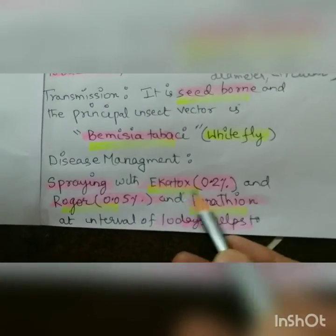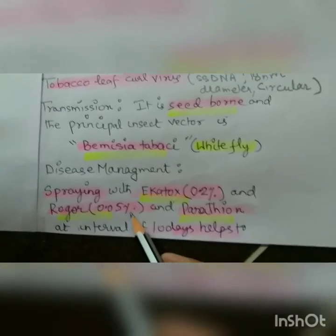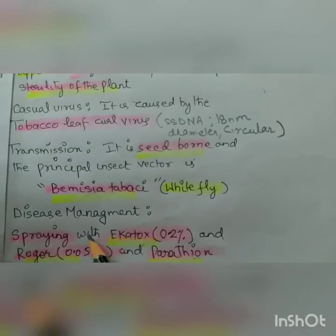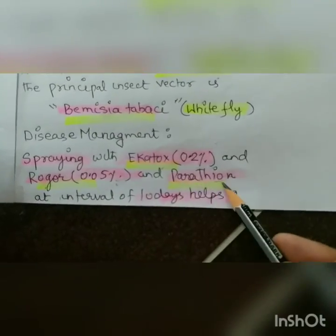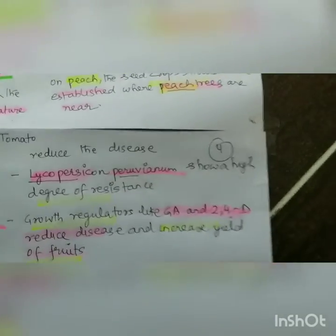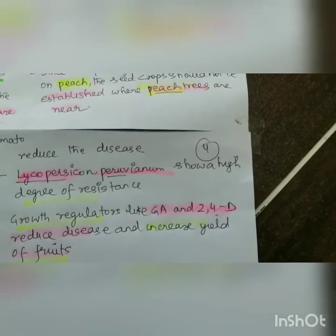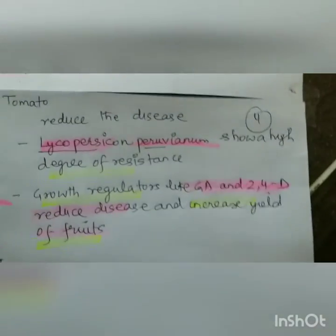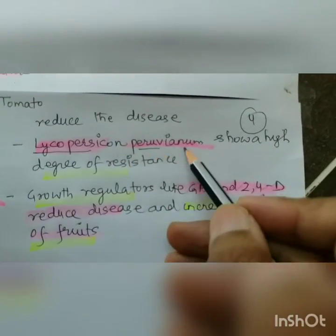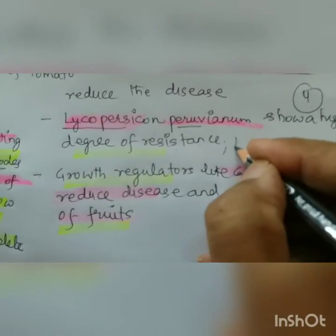When Bemisia tabaci is present, spray Ecatox 0.2%, Rogor 0.05%, Metasystox 0.05%, and Parathion at an interval of 10 days to help reduce disease. As with papaya, where Carica cauliflora is used as a resistant wild variety, in the case of tomato, Lycopersicum peruvianum shows a high degree of resistance and is used for breeding purposes.